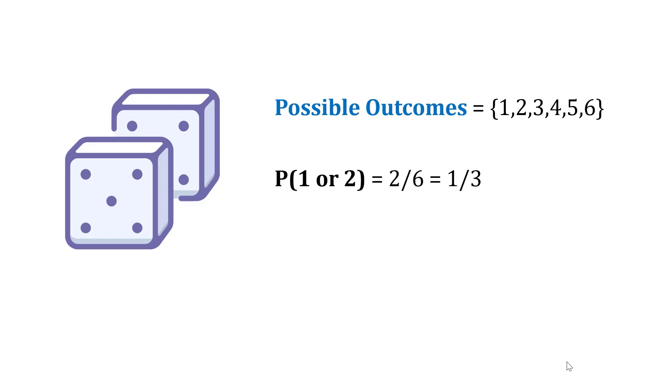We could also ask the probability of rolling a 1 or a 2. That's 2/6 or 1/3, because it's two sides of a six-sided die. Or we could ask the probability of rolling an odd number. There are three odd numbers on a six-sided die, so that would be 3 divided by 6, or 1/2. So we can look at the probability of achieving one outcome, or potentially multiple outcomes, in a scenario or experiment.